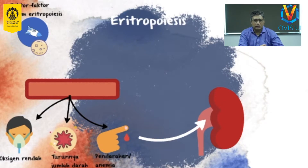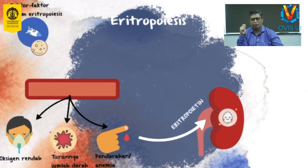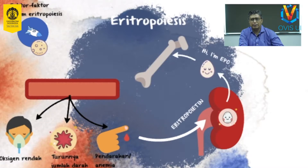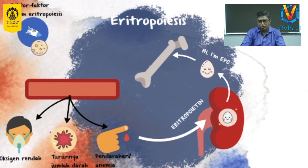Eritropoitin adalah hormon yang memberikan stimulasi pada sel prekursor hematopoietik yang berada pada sumsum tulang untuk menghasilkan lebih banyak sel darah merah. Jika tubuh kehilangan banyak darah, sumsum tulang kuning dapat berubah menjadi sumsum tulang merah untuk memproduksi darah. Namun seiring bertambahnya usia seseorang, banyak dari sumsum tulang merah berubah menjadi sumsum tulang kuning, sehingga produksi sel darah merah yang baru akan menjadi sulit.